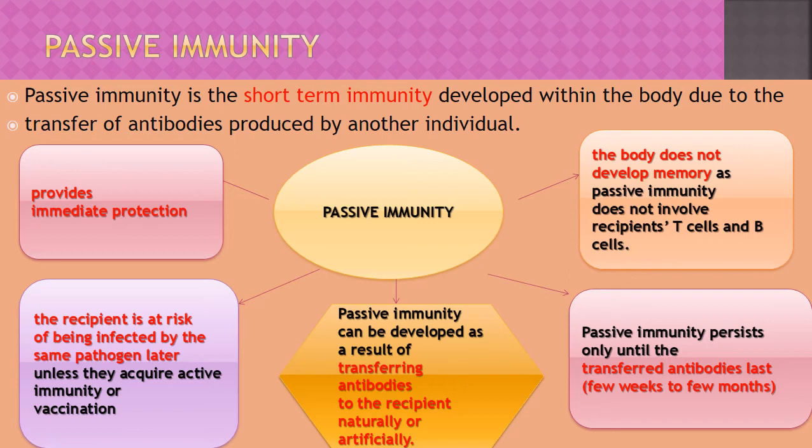The body does not develop memory because passive immunity does not involve the recipient's T cells and B cells — they are not stimulated, and the humoral or cell-mediated response is not involved. Passive immunity persists only until the transferred antibodies last — that means a few weeks to a few months only. Passive immunity can be naturally or artificially acquired.